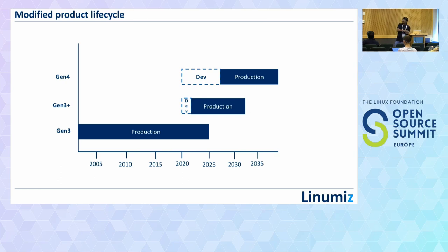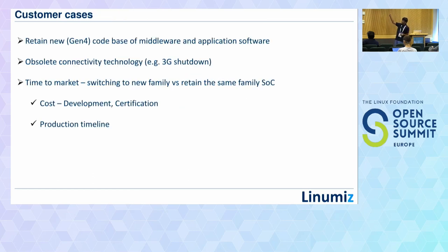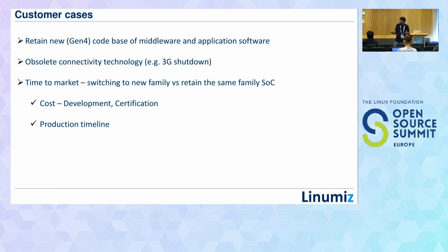New customers in telematics want to migrate to something new in software while potentially retaining the same hardware. The primary customer use cases are: retain the middleware and application software developed for Generation 4 and use it directly on Generation 3 hardware, and create an intermediate hardware platform called Generation 3 Plus. Also, 3G connectivity is now obsolete — several countries have already closed their 3G networks — and the Generation 3 platform uses a Qualcomm modem primarily based on 3G.